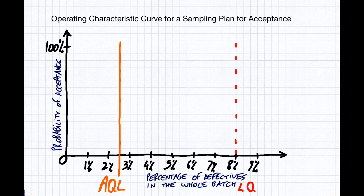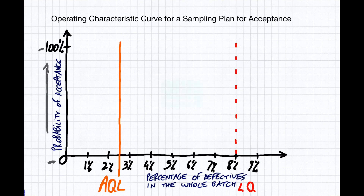Here is the way it's usually presented. On this axis here is the probability of acceptance of the batch, from 0 to 100% — from 'for sure it's rejected' to 'for sure it's accepted.'